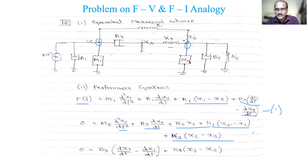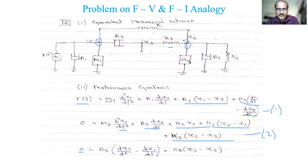Second equation at x2: no force, so 0 = m2·(d²x2/dt²) + b2·(dx2/dt) + k2·x2 + k1·(x2 − x1) + k3·(x2 − x3). Third equation at x3: no force and no self element — only mutual terms — so 0 = b3·(dx3/dt − dx1/dt) + k3·(x3 − x2). Remember: with mass comes a d² term, with b comes d/dt, and with k comes the displacement term directly.